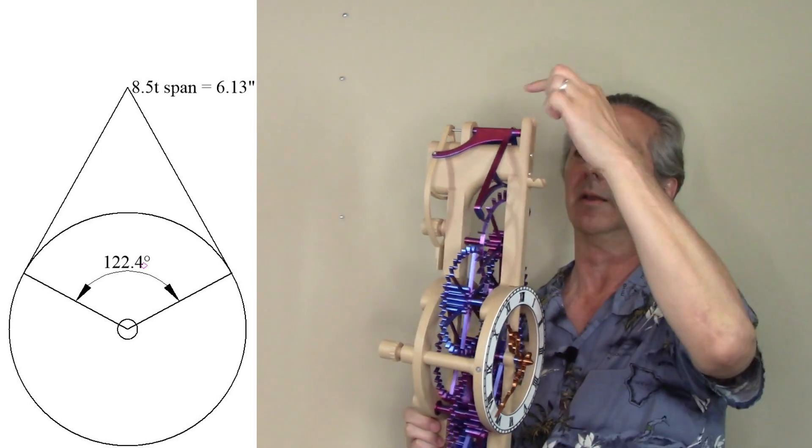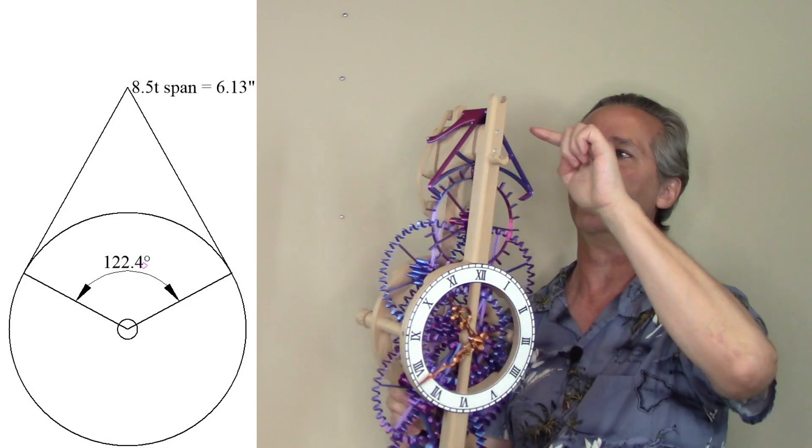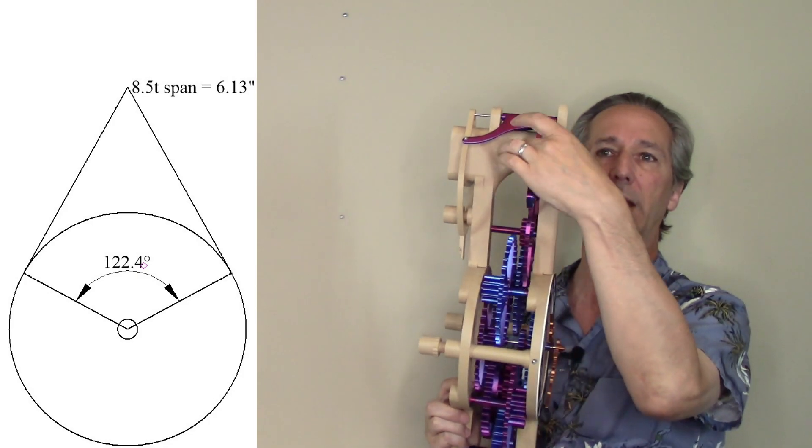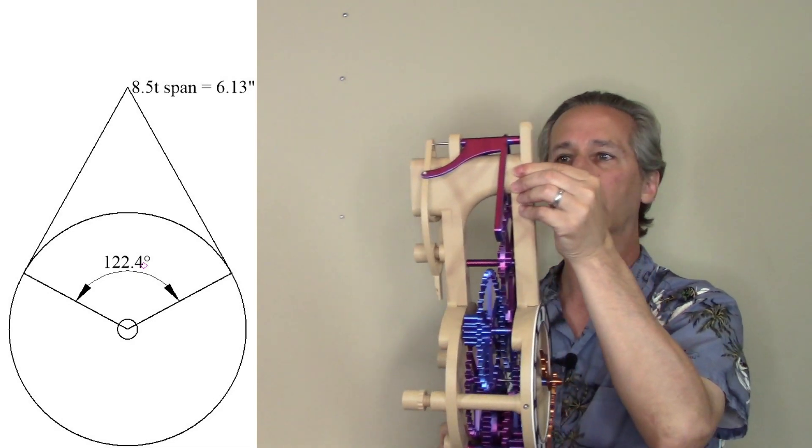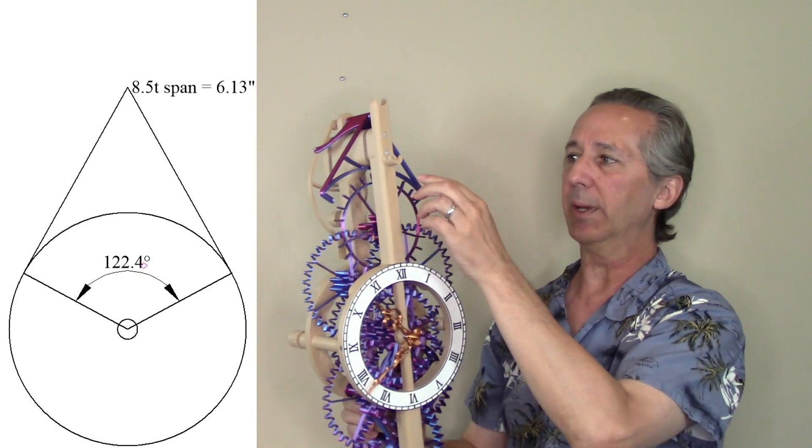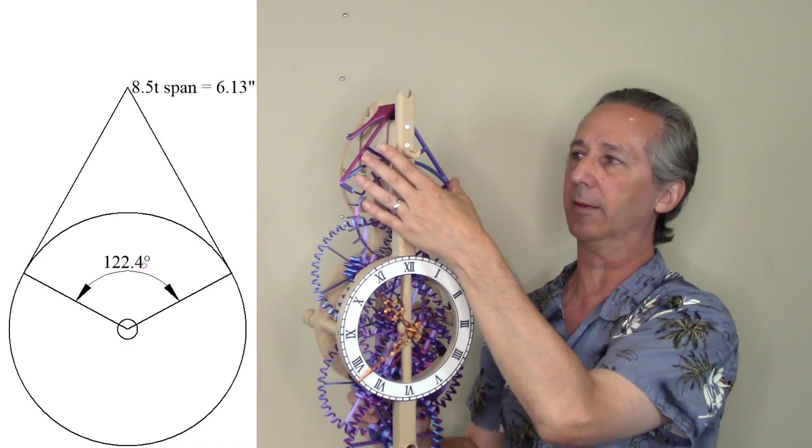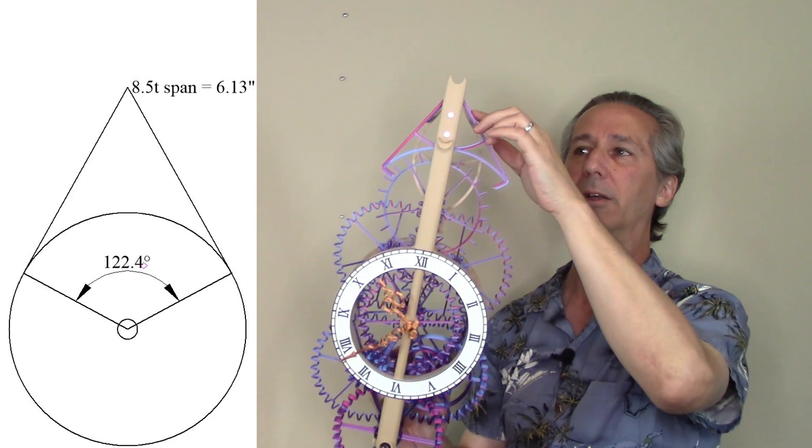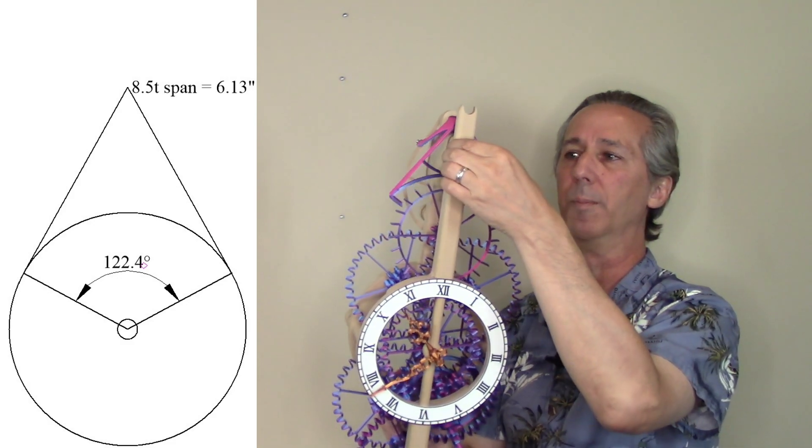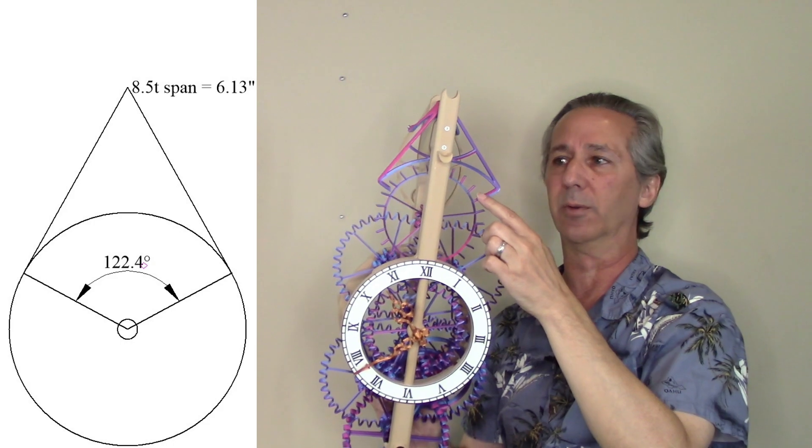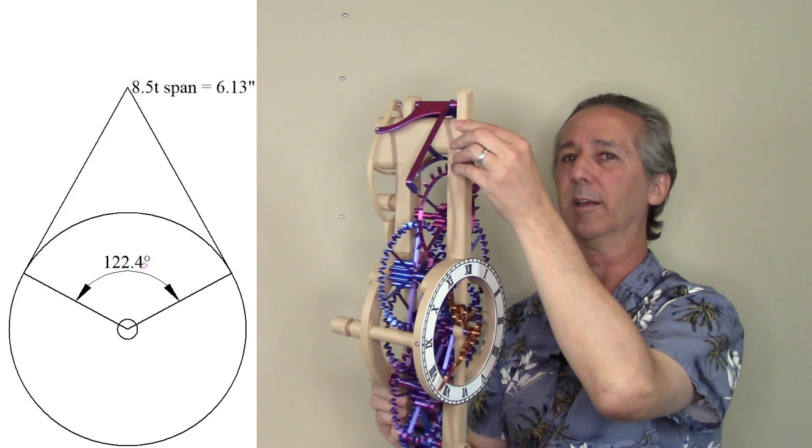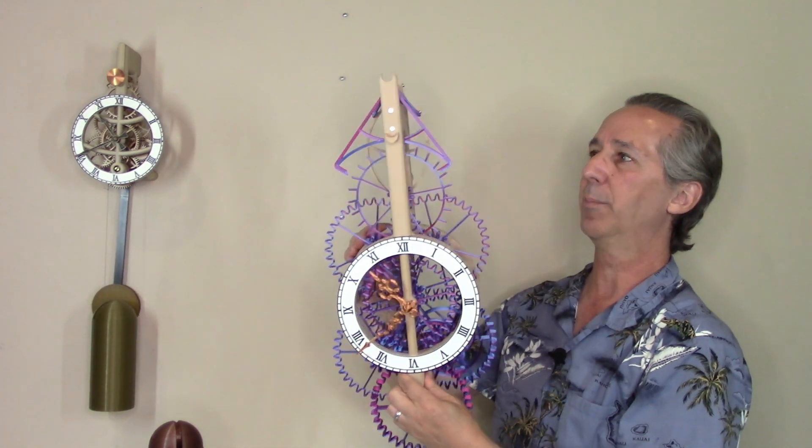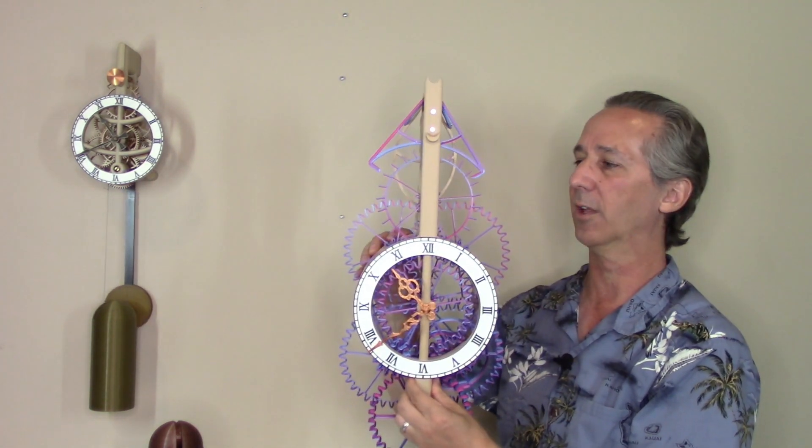So I picked one that looked like it had a reasonable distance. On this clock, the pallet spans around the support beam that's built into the frame to help eliminate sagging. And so I picked a tooth span for the escapement and pallet that allows the pallet to go around that support arm. The span was selected to fit the frame of the clock. And then at that point I've got a full 2D model of this clock.